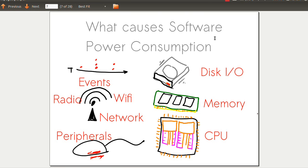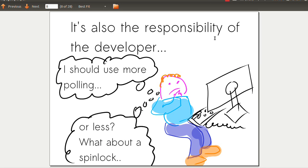What are the causes of software power consumption? There are events over time. Events require resources and attention. Often the resources are things like Wi-Fi network, interrupts from peripherals, disk IO, memory, CPU. All of these things that you use in software lead to software-based power consumption. Essentially, it's the developer's responsibility.